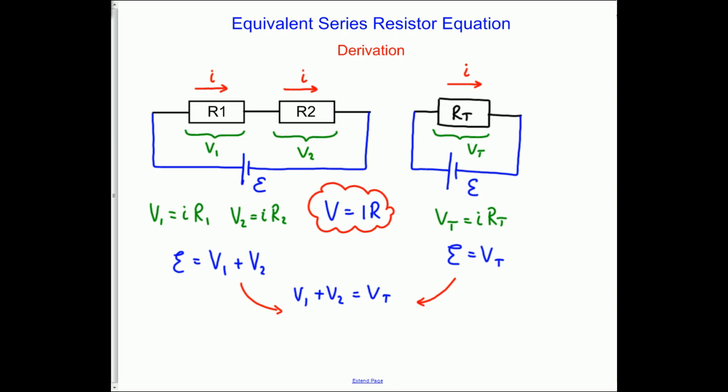And now if we substitute for V1 for IR1, we write IR1 plus, and we substitute for V2, IR2. And because the circuits are equivalent, each of those currents cancels out. Same in every term. So we're left with R1 plus R2 equals RT. And that's the equation for series resistors.